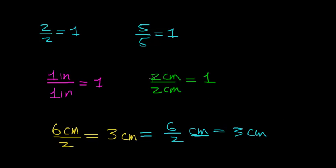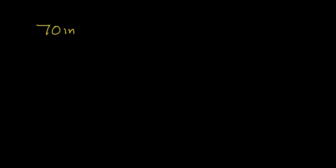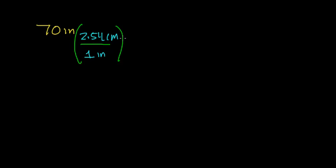Now we're going to use all of these ideas to talk about what happens when you multiply a number by a conversion factor. Suppose we want to convert 70 inches to centimeters. We'll need to multiply 70 inches by a conversion factor. We know that 1 inch is exactly equal to 2.54 centimeters, and a good way to think about conversion factors is as equalities using this unit relationship.